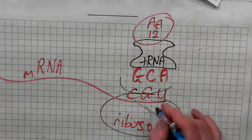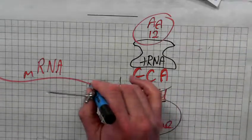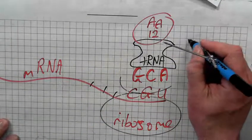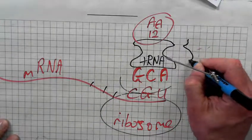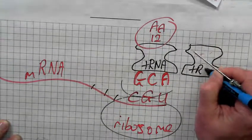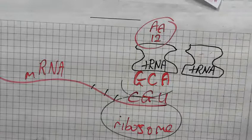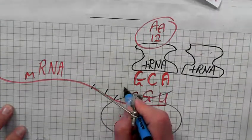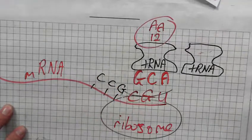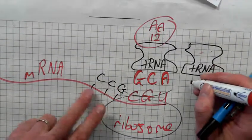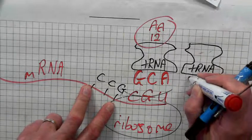Then the ribosome will read the next triplet and ask the next tRNA molecule to come in from the cytoplasm. So let's say the next sequence is GCC. What tRNA molecule will come in to bind to this? G.